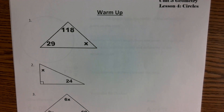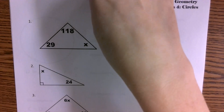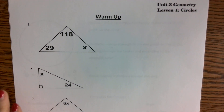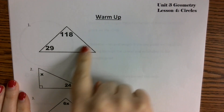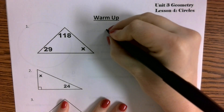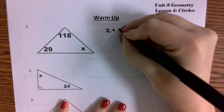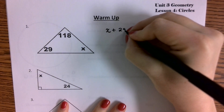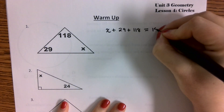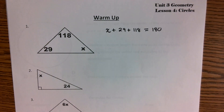Let's go ahead and go over this. Remember, last week we talked about the triangle sum theorem, where the triangle sum theorem states that if you add all three angles together, it's going to equal a total of 180 degrees. So if we were to write an equation out for this, we would take x plus 29 plus 118, and the whole thing is supposed to be equal to 180.